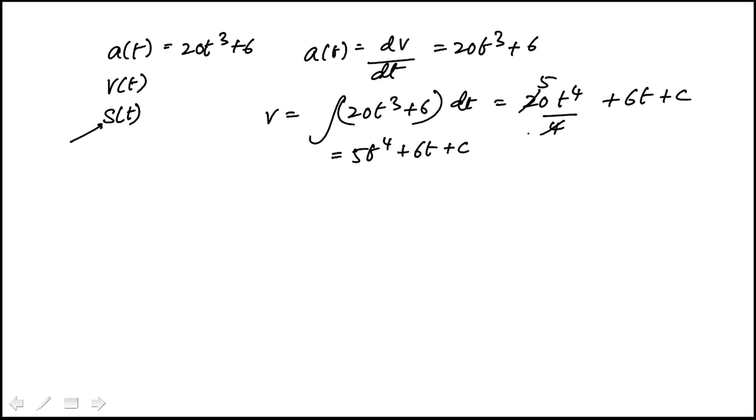Now I'm given that at t equal to 0, the velocity is 0. So if I replace that here, this is 0, 0, so the constant is 0.